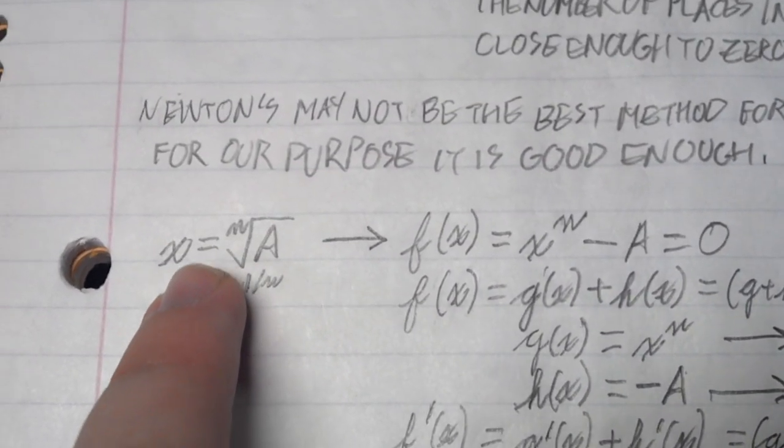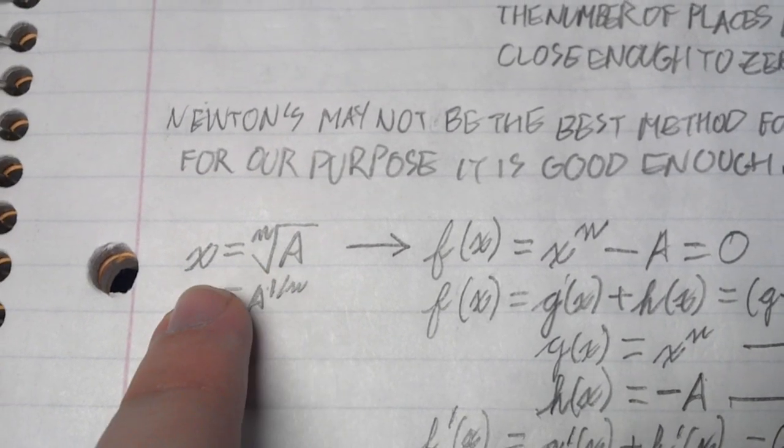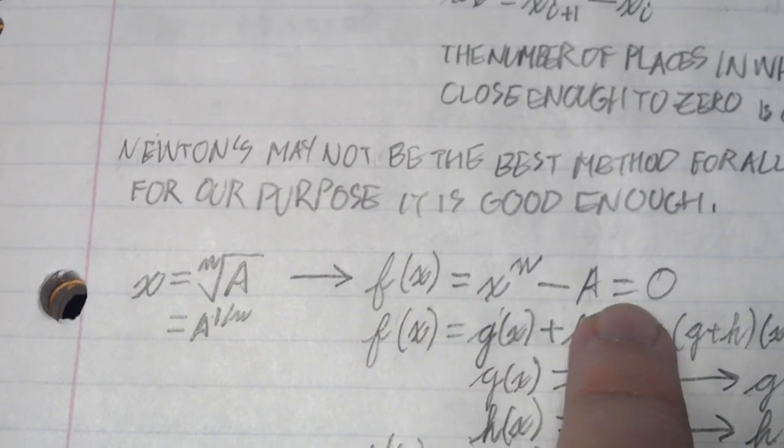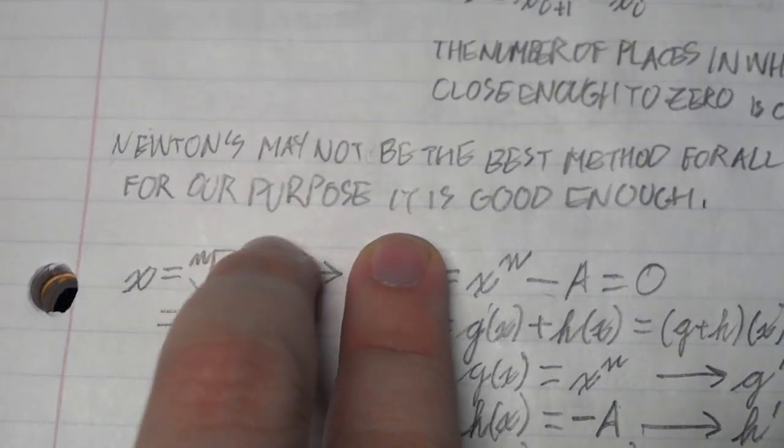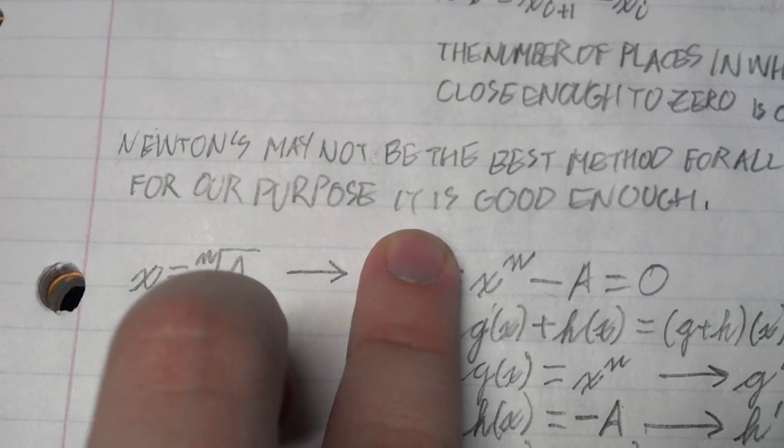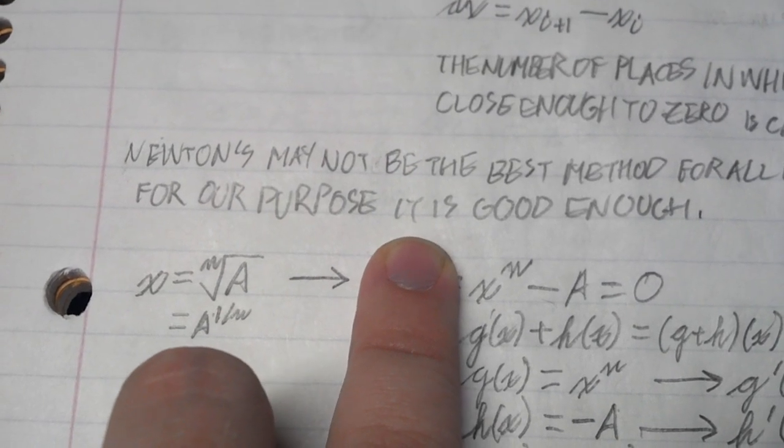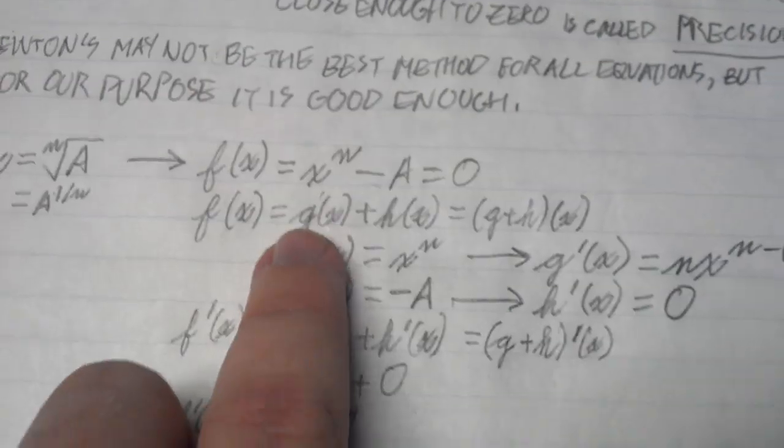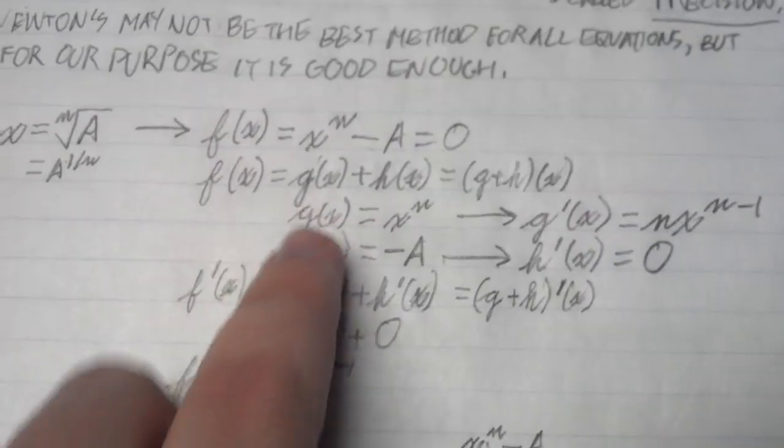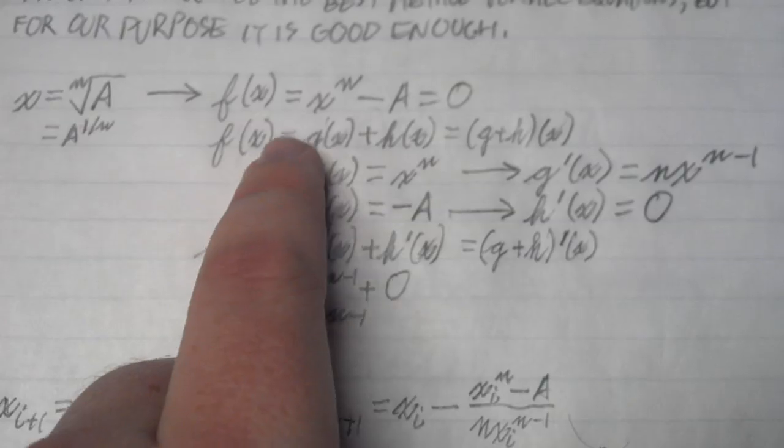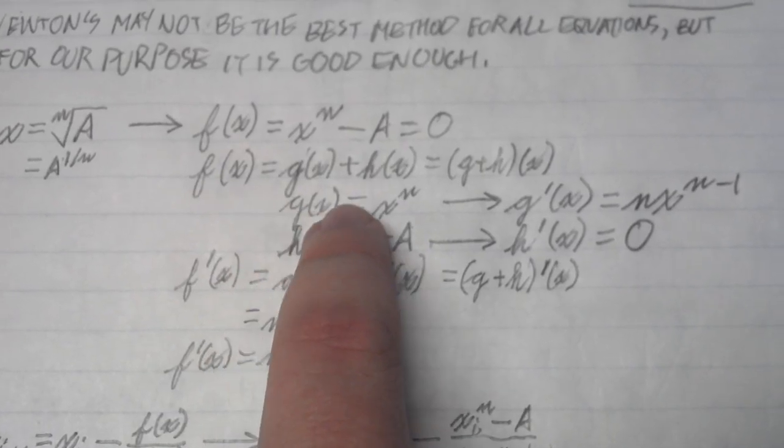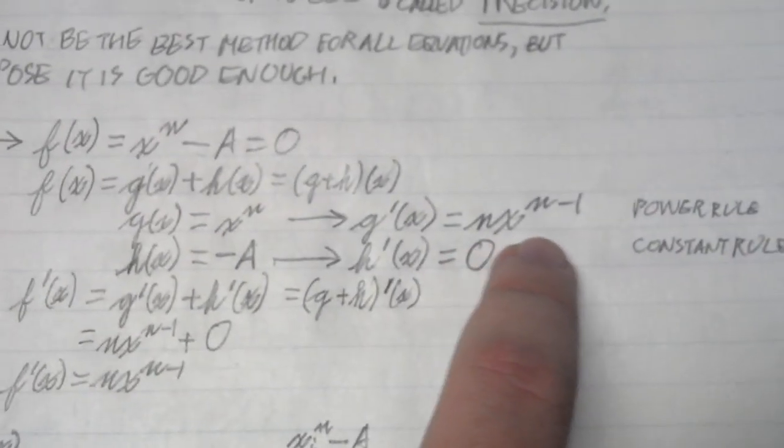In order to find the nth root of a, we must first convert the equation into a root format. We take all the stuff from one side and put it on the other side with x, such that it equals zero. From there, we can use that as f(x). We then use this information to generate our derivative.